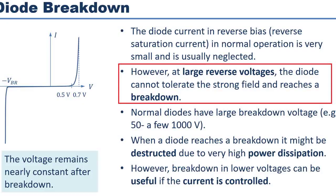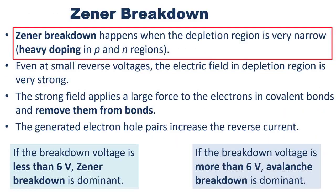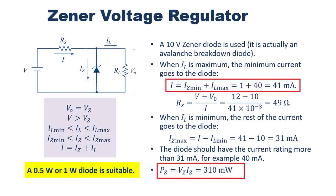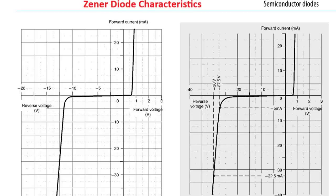What is a zener diode? A zener diode is a special type of diode used in electronics. Like a normal diode, it lets current flow in one direction when forward biased. But what makes it different is that it can also work in reverse at a set voltage called the zener voltage. This means it can keep voltage steady, protect circuits from surges, and act as a voltage reference. In short, normal diodes control current, while zener diodes control voltage.